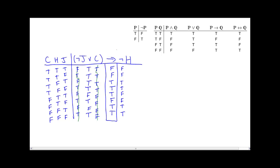As you can see, once you get practiced at it, doing complete truth tables is not terribly difficult. That's basically all we have to cover in this video. In the next video, we are going to see how to use the truth table method to determine various properties of individual formulas, pairs of formulas, sets of formulas, and arguments.